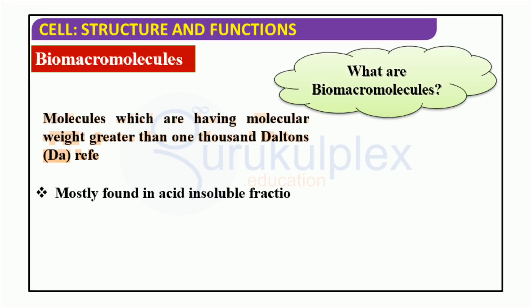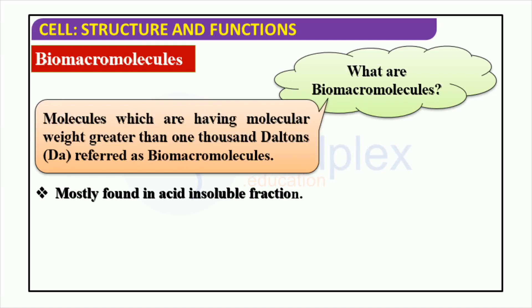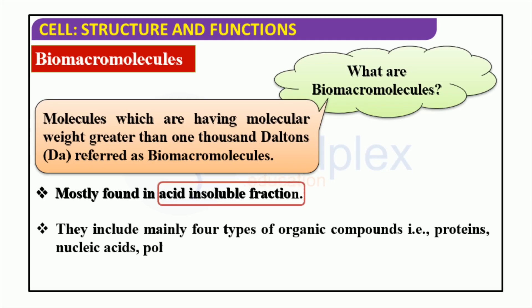Biomacromolecules are large organic molecules found in living organisms with molecular weights of over 1,000 daltons, making their structures more complex than smaller molecules. They include proteins, nucleic acids, polysaccharides, and lipids, each playing a different role in the functioning of a biological system. Proteins are used in energy metabolism and muscle contraction, nucleic acids are essential for genetic expression and regulation, polysaccharides act as storage molecules, and lipids form cell membranes. Overall, biomacromolecules are vital components of all living organisms.